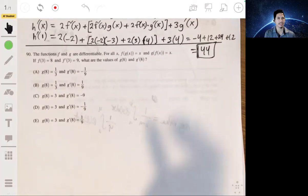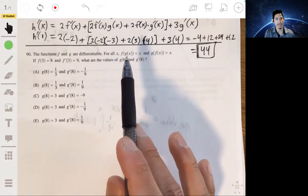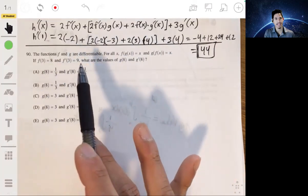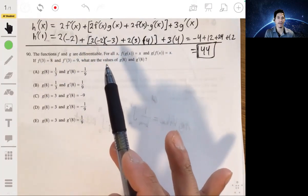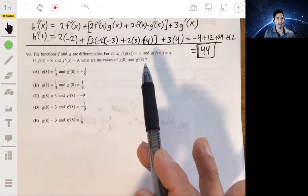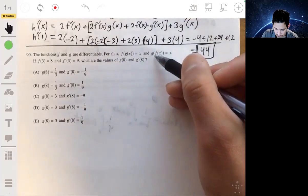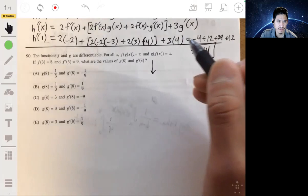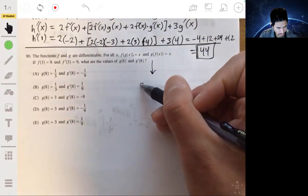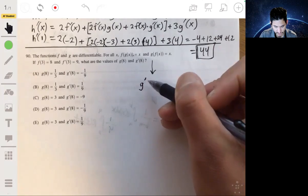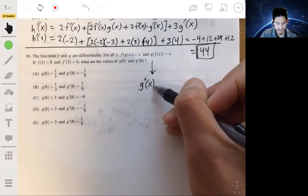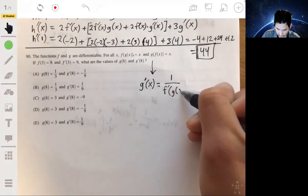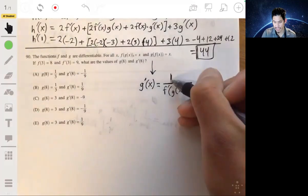You're 90. Functions f and g are differentiable for all x, f of g of x equals x, and g of f of x equals x. We're given that f of 3 equals 8 and f prime of 3 is 9. What are the values of g of 8 and g prime of 8? Okay, so this basically tells you that g and f are inverses of each other. So since they're inverses of each other, there is this equation for the derivatives of inverses where the derivative of g of x is simply equal to 1 over f prime of x. I recommend just to memorize this.